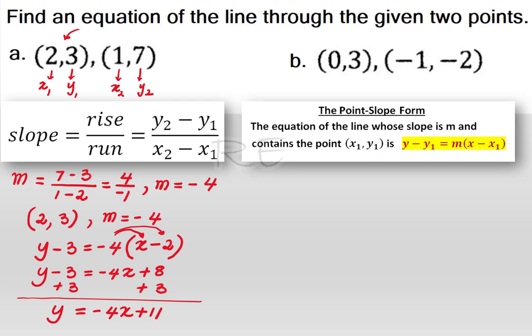Similarly, for b, we're going to choose (0,3) as respectively x1, y1, and (-1,-2) as x2, y2.